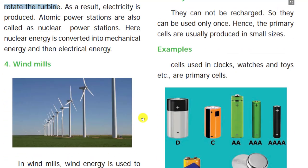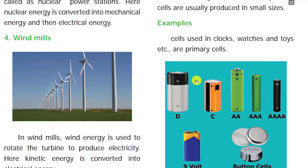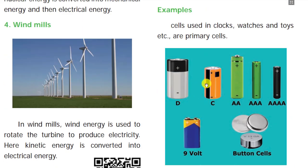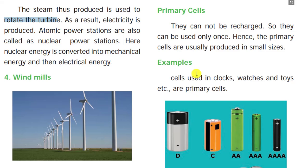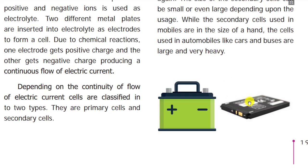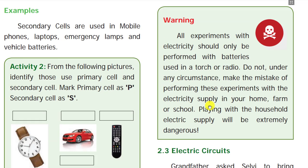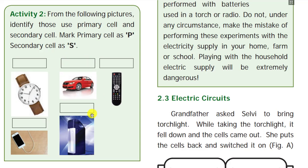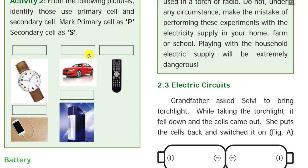Next we see about cells. A device that converts chemical energy into electrical energy is called a cell. There are two types: primary cells and secondary cells. Primary cells — like those in wall clocks, remotes, and wristwatches — cannot be recharged; they are used only once. Secondary cells can be recharged many times. Examples of secondary cells include mobile batteries, automobile batteries, vehicle batteries, and UPS batteries.